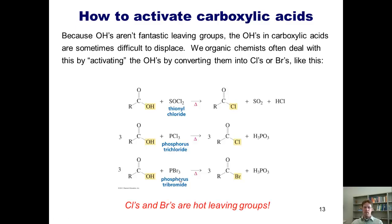One thing that's useful about this is that chlorides and bromides are hot leaving groups, which means that you can take these products and displace these halogen atoms with a number of nucleophiles that would not be able to displace an OH quite as easily.